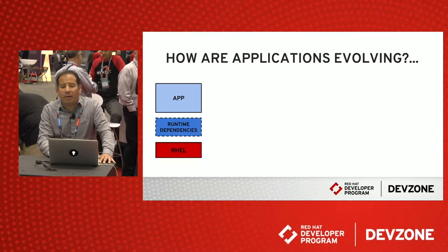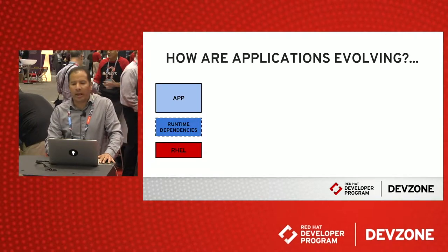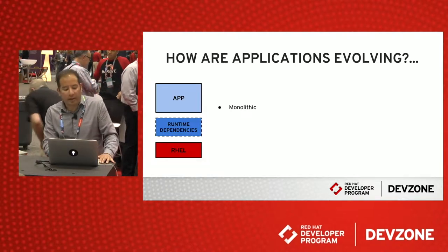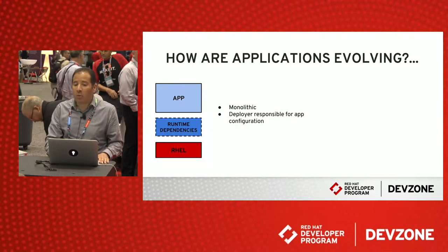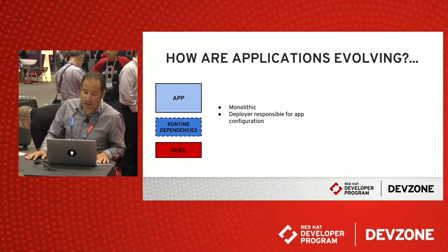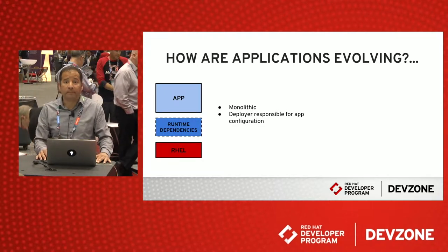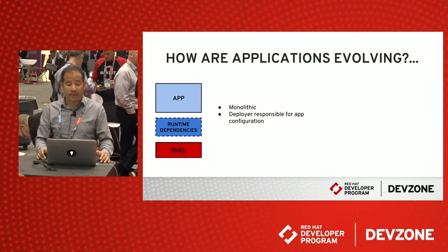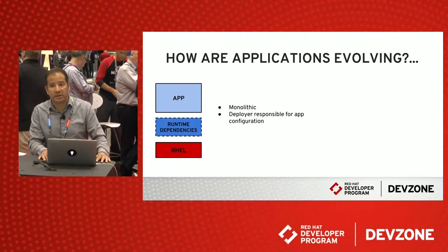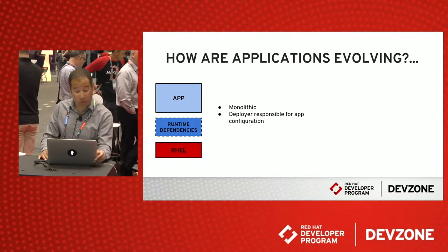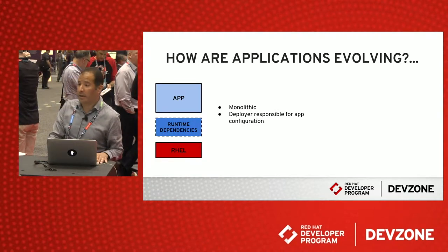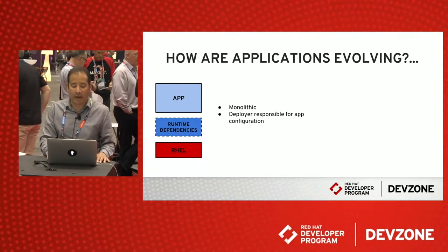Let's take a step back and look at how applications are evolving. If you look at how applications were built a few years ago, they were done in a somewhat monolithic fashion. The application provider would define the limits of the application, and how the environment was configured for deployment was the responsibility of the application deployer, usually a system admin. The application often had some hard dependencies — libraries from the operating system or dependencies from other sources — and at the bottom of the stack, an operating system, most likely Linux, and in the case of Red Hat, Red Hat Enterprise Linux.